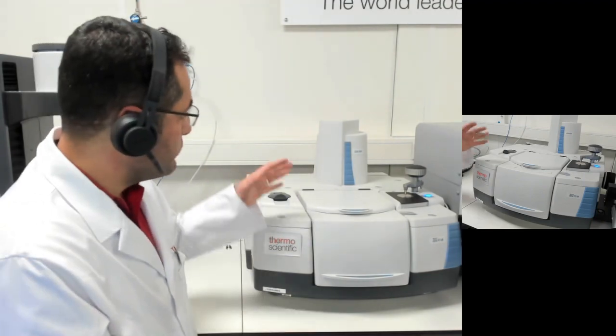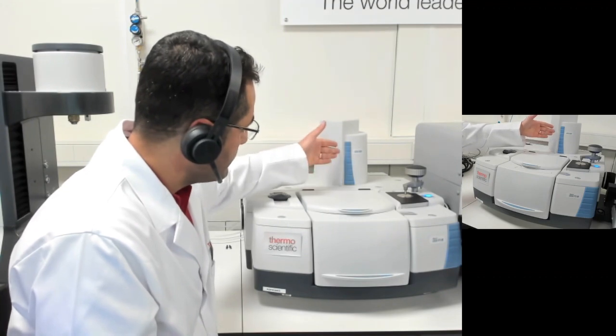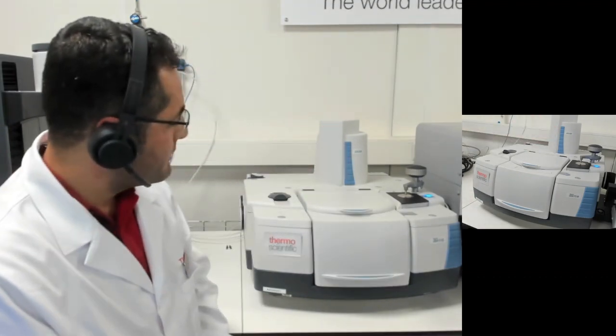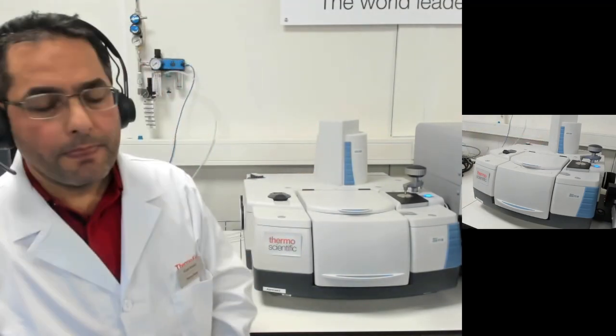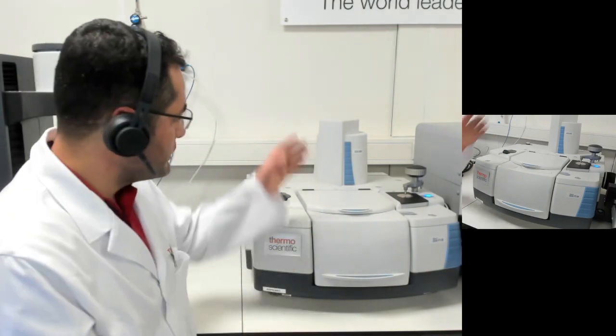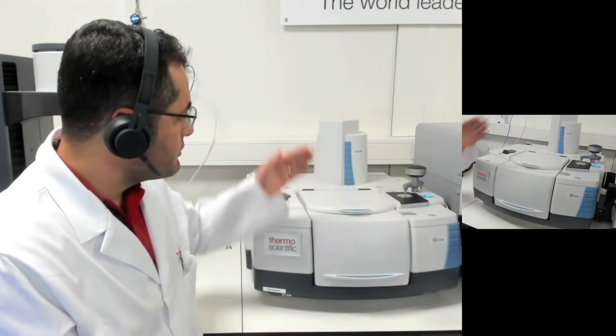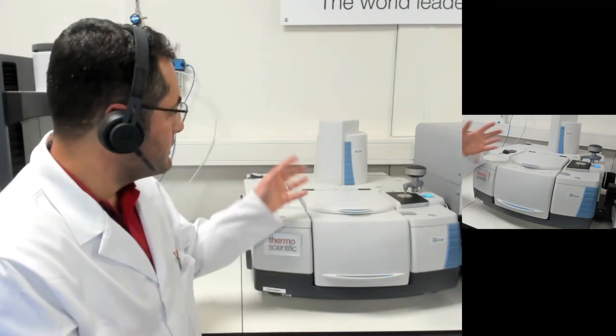For the automatic exchange of the beam splitter we have an automated beam splitter exchanger called the ABX that will change the beam splitter for you automatically. If you do not order the ABX at purchase you can change the beam splitter manually. You can also still order it and install it easily.